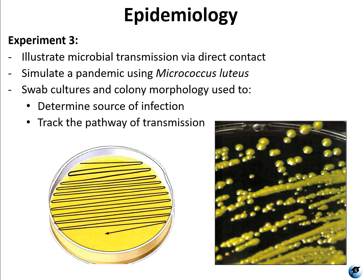For experiment three, we're going to be honorary epidemiologists. This experiment involves the entire class working together. We'll have several different petri dishes with candy in them, and one candy will be inoculated with Micrococcus luteus. Certain volunteers will swab the candy and inoculate their hand, and then we'll have a couple of rounds of handshakes. We'll use swab cultures to try to find where the Micrococcus luteus ended up and hopefully trace it back to its source.